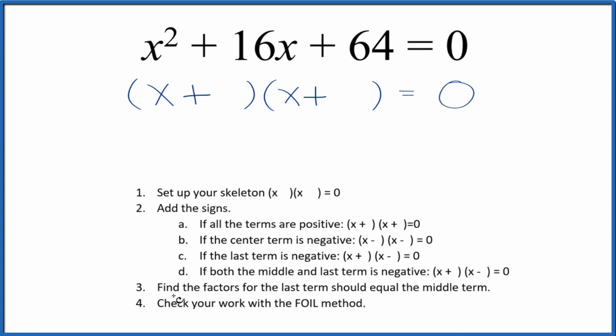Once we have that, we want to find the factors for the last term. That's the 64 here. They should add up to the middle term.